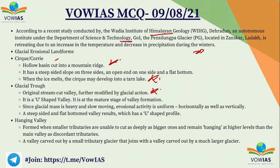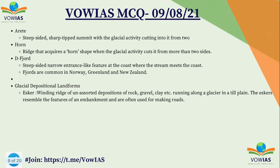Since glacial mass is heavy and slow-moving, the erosional activity is uniform — both horizontal and vertical — resulting in a steep-sided, flat-bottomed valley with a U-shaped profile. The hanging valley is formed when small tributaries are unable to cut as deeply as larger ones and remain at higher levels as discordant tributaries. The Arête is a steep-sided, sharp-tipped summit. The Horn is a ridge that acquires a horn shape due to glacial activity cutting into more than two sides. The Fjord is a steep-sided, narrow inlet at the coast, common in Norway, Greenland and New Zealand.